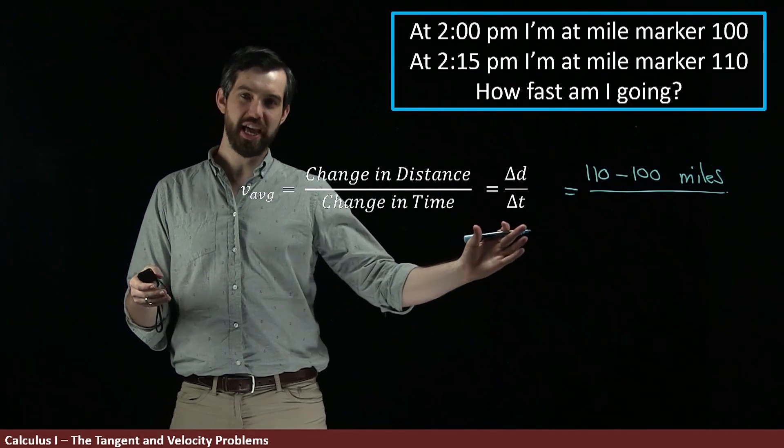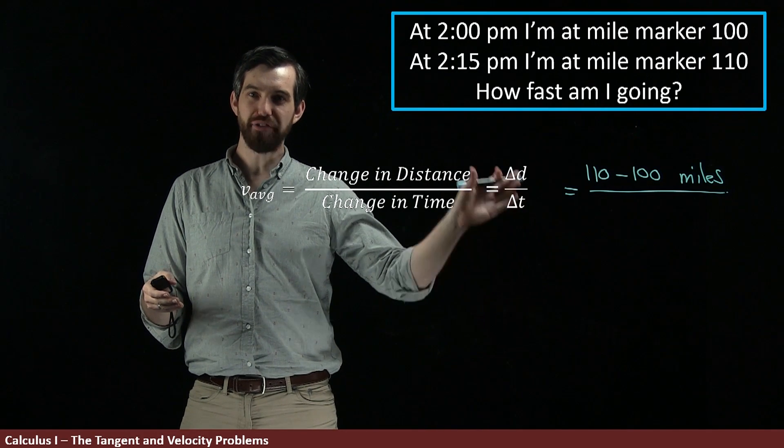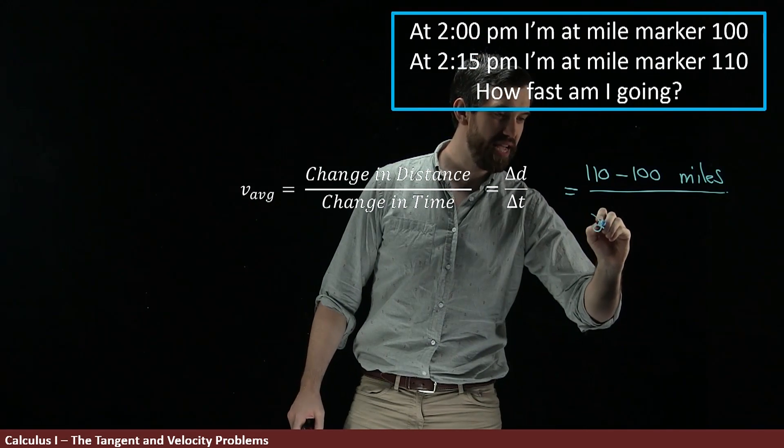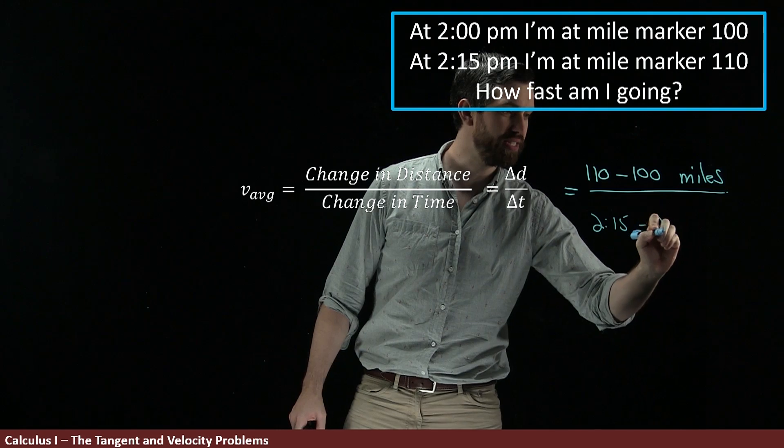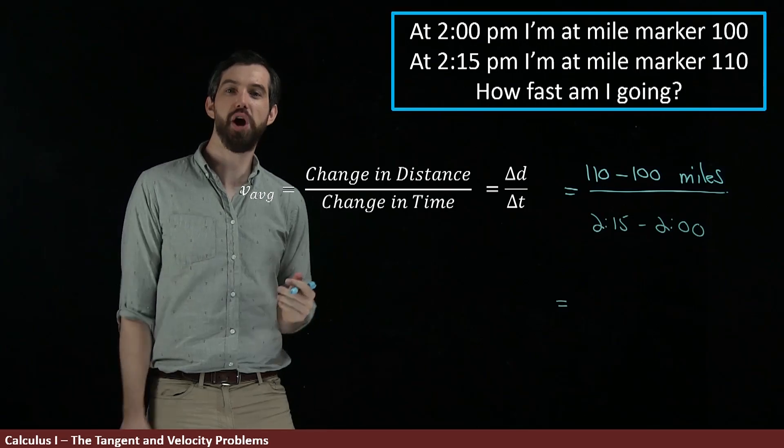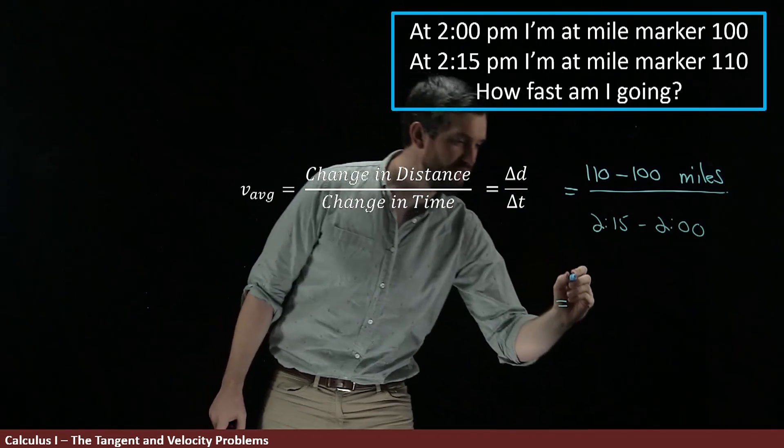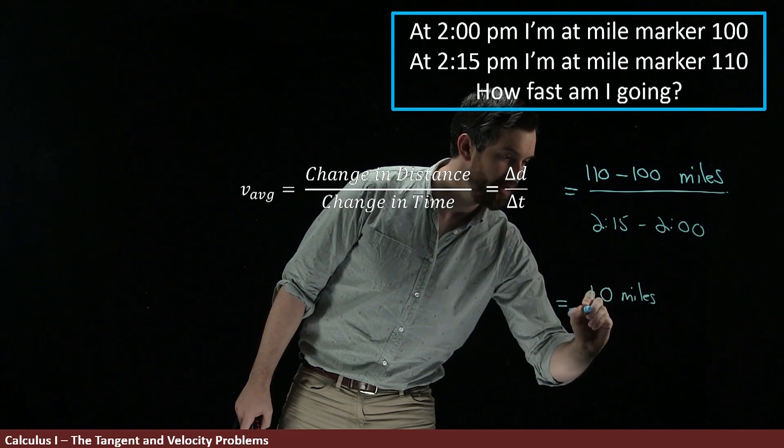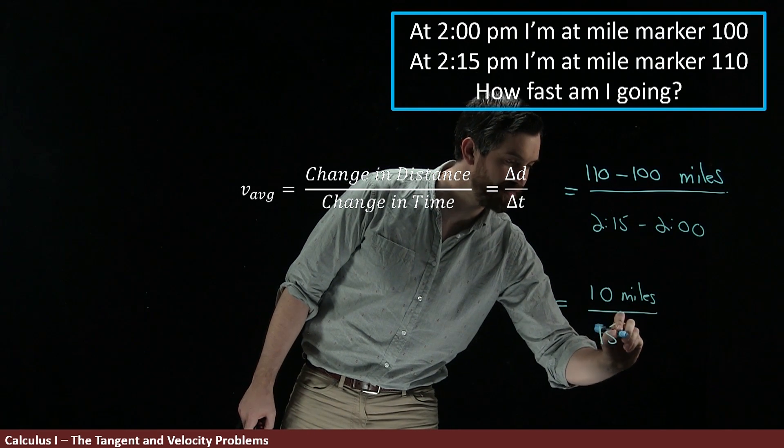And then if I want to investigate the change in time, I've gone from 2 o'clock to 2:15. So I'm going to write this as 2:15 minus 2 o'clock. I'm sort of abusing my notation here a little bit but I can do this computation to say that the difference here is going to be 10 miles divided out by 15 minutes.